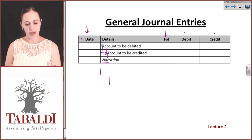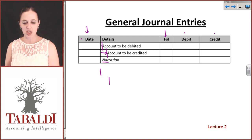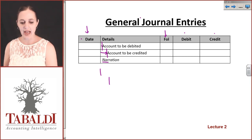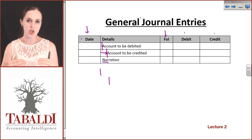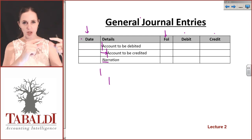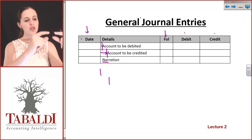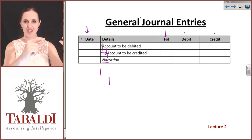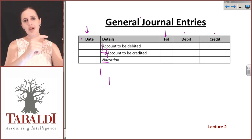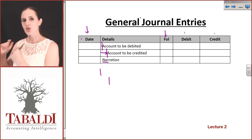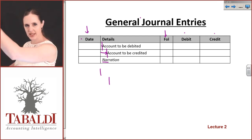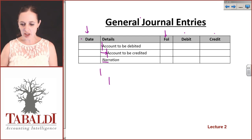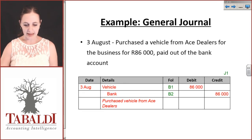The general journal allows us to show the debits and credits for each transaction together — so for one transaction I can see the debits and credits together, whereas in the general ledger the debit and credit for that transaction is going to be split up. So let's take a look at an example quickly.